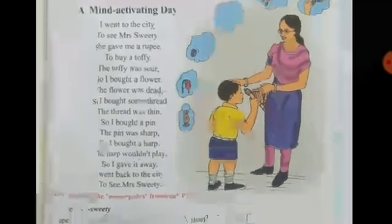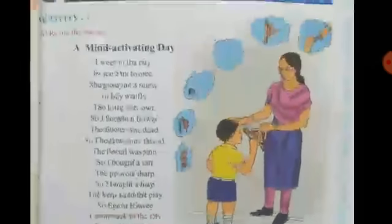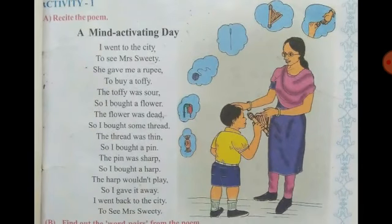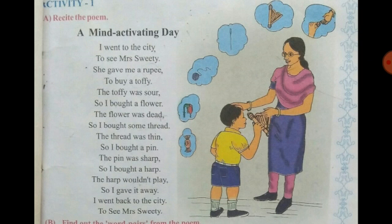In this poem, there is a girl who goes to the city to see Mrs. Sweetie. She gives her a piece of money. After that, they are trying to give her an opportunity.